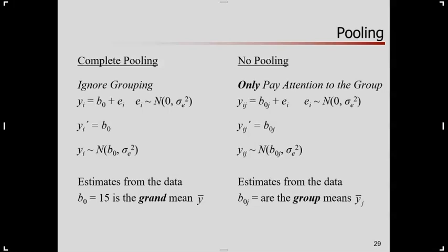These B0j's are different from this B0. This is an overall thing applies to everybody. This is a group-specific thing applies to people in group j. How would I estimate those 40, in this case, B0j's? Those are the group-specific means, not the overall grand mean in the data, but the mean of scores in group j, or from group j.